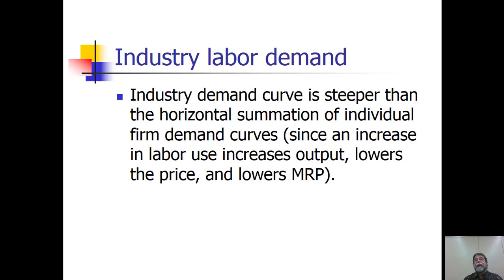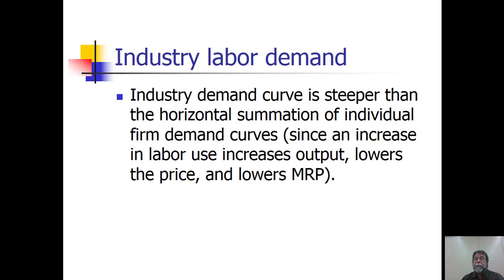If you think back to your principles class, the market demand curve is derived by adding together horizontally all the individual consumer demand curves. However, that doesn't quite work for labor markets, because when you sum all individual firm demand curves and move along that combined curve, the amount of labor changes, output changes, and while each individual firm is too small to affect the market price of output, all firms together in the industry will affect it. So when the price of labor goes down and quantity of labor goes up, the marginal revenue product itself changes — meaning the industry labor demand curve is somewhat steeper than the horizontal summation of individual firm demand curves would suggest. And that's the end of this section.